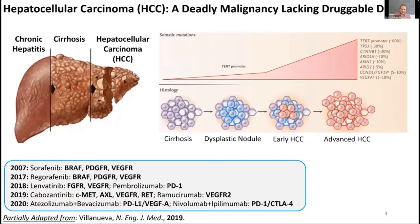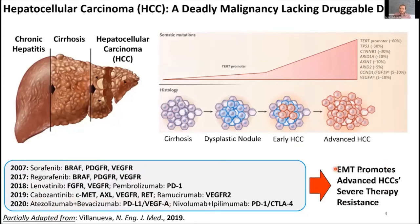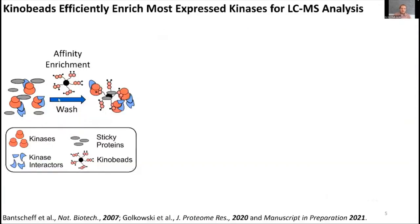There is evidence that EMT promotes HCC's high intrinsic therapy resistance, and also adaptive therapy resistance, as shown by the kinase inhibitor cabozantinib, which targets two prominent EMT kinases: c-MET and AXL. Cabozantinib is the second-line treatment after sorafenib when patients progress. There is clear evidence that EMT is driven by kinases in HCC, but there is no unifying picture of the pathways driving drug resistance in EMT.